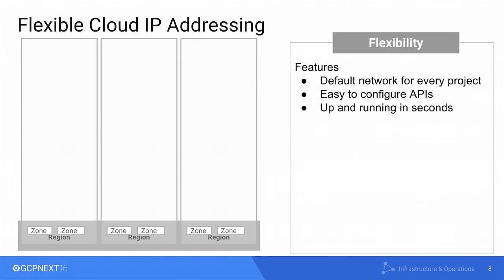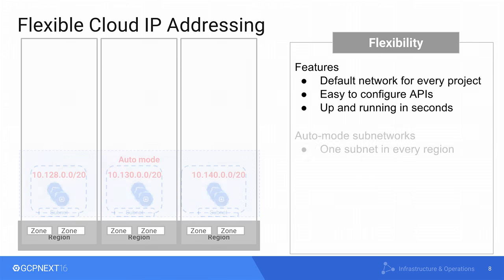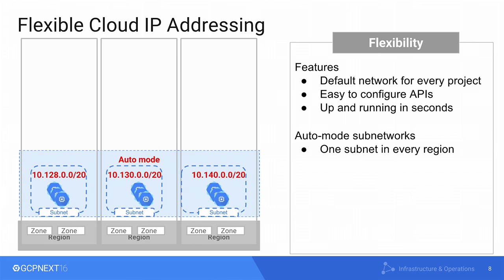Let's look at IP addressing. IP addressing and naming are very fundamental for networking. We've spent a lot of time talking to customers to see how we can provide a seamless migration. The moment you create a Google account and a project, you get a default network pre-created for you. Inside the default network, we create auto-mode sub-networks — one sub-network in every region. These are non-overlapping, non-contiguous different ranges, and we pick the addressing range for you.